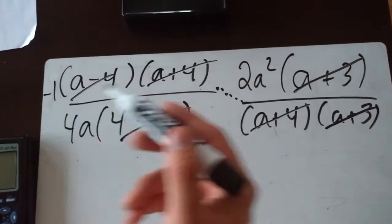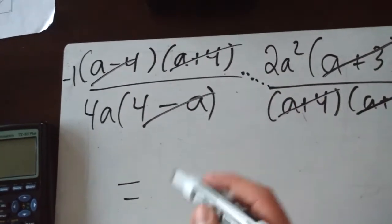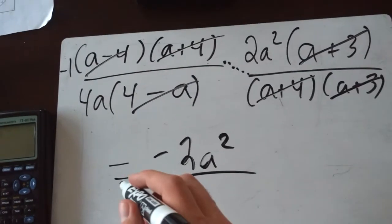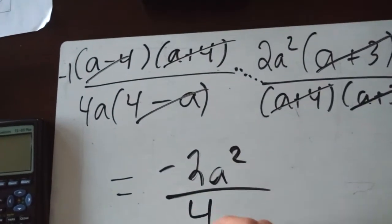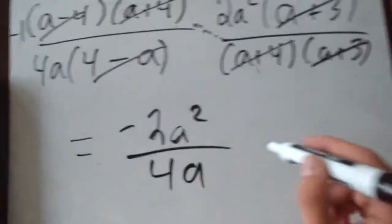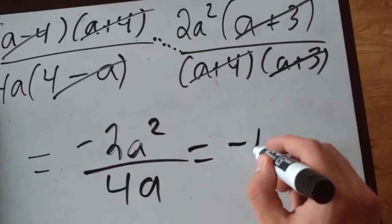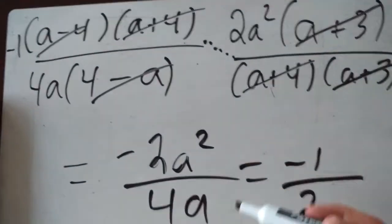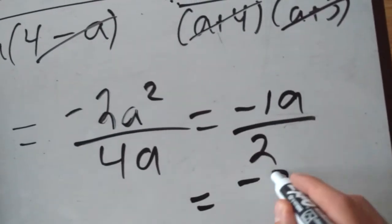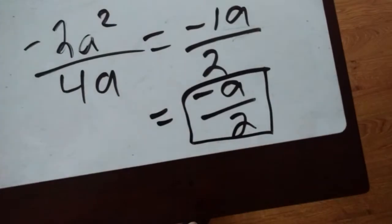So all we're left with is negative 1 times 2a squared, which is negative 2a squared, over the only thing left on the bottom, which is 4a. We can simplify further: negative 2 divided by 4 is negative one half, and a squared divided by a leaves just a. So we can write it as negative a over 2, and that is now completely simplified.